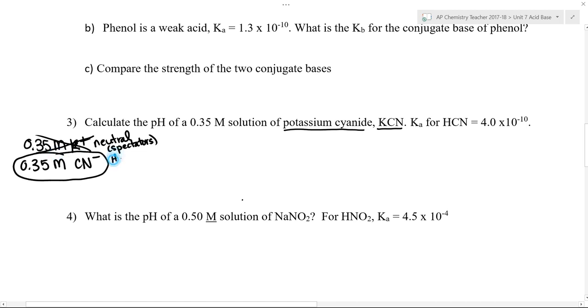That leaves our CN minus as a possible acid or base. Is it a good hydrogen giver? It doesn't have any hydrogens to give. Is it a good hydrogen taker? Sure, it's a negative ion. Negative ions are always good candidates for being hydrogen takers because they like those positive hydrogen ions.